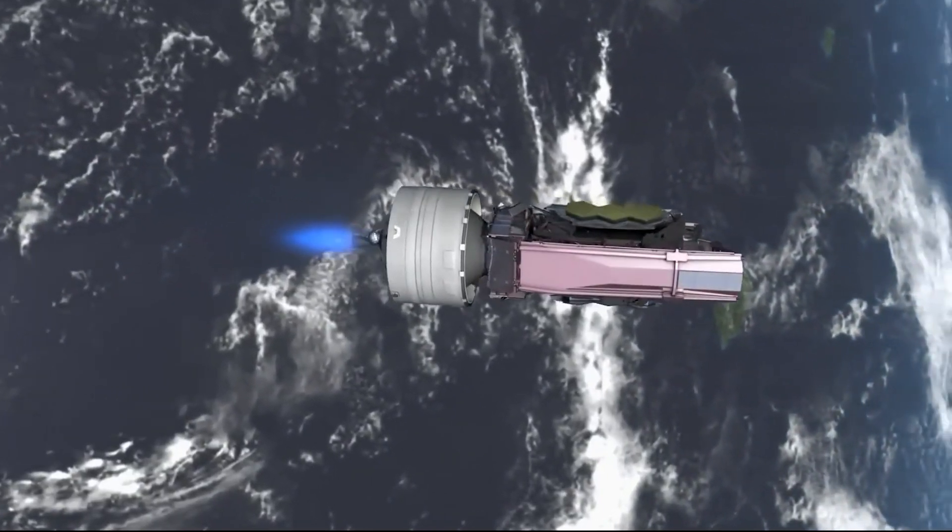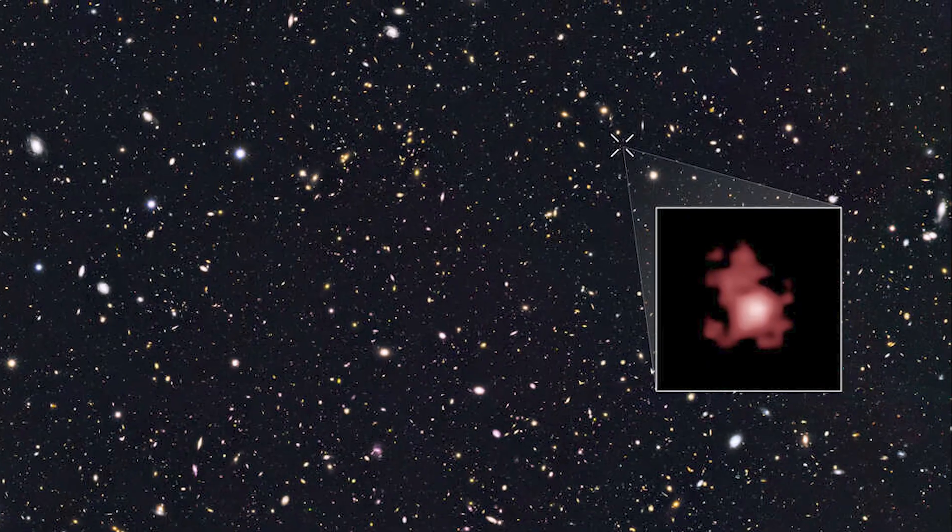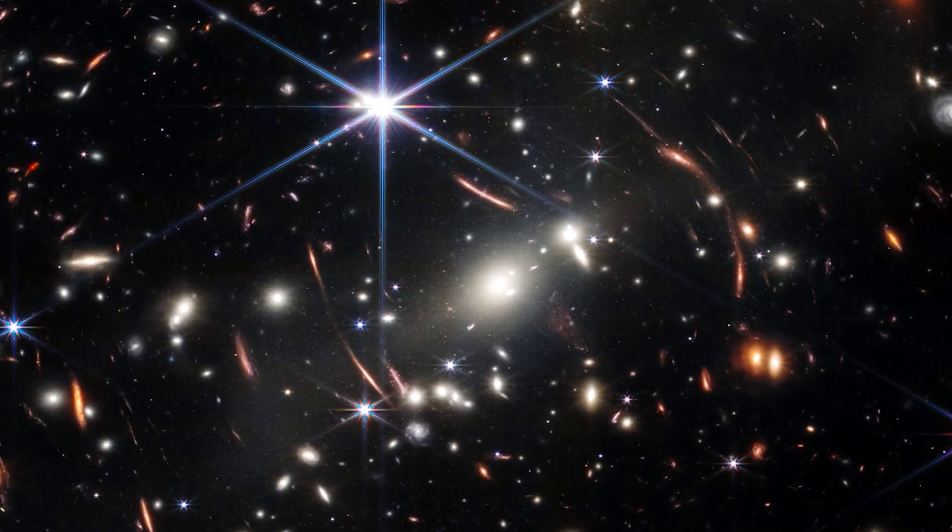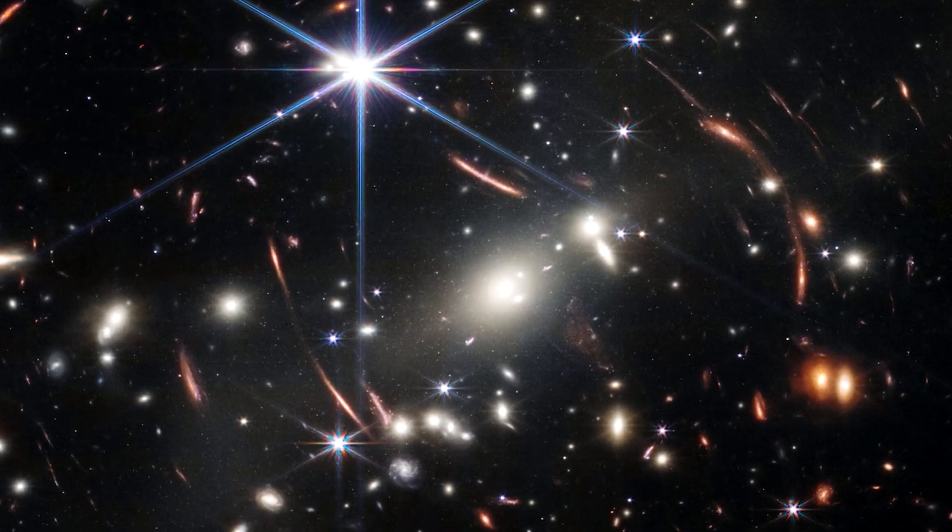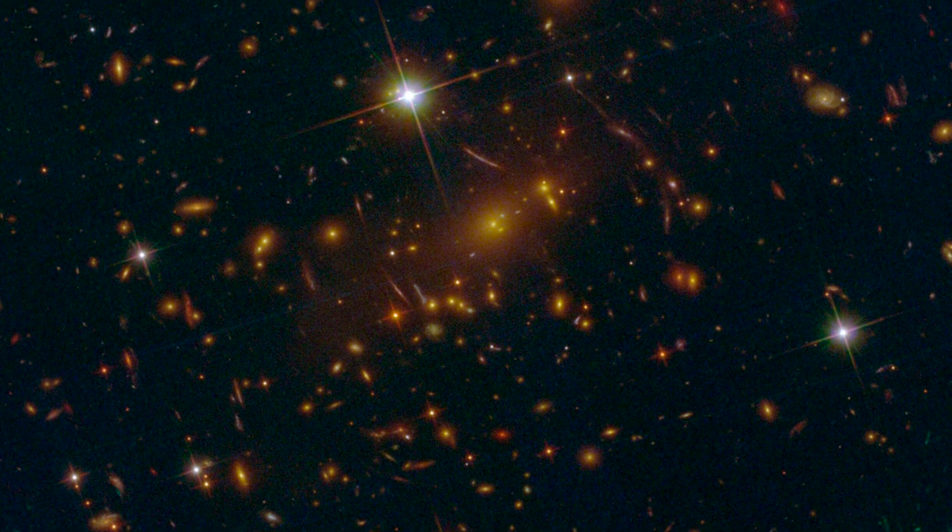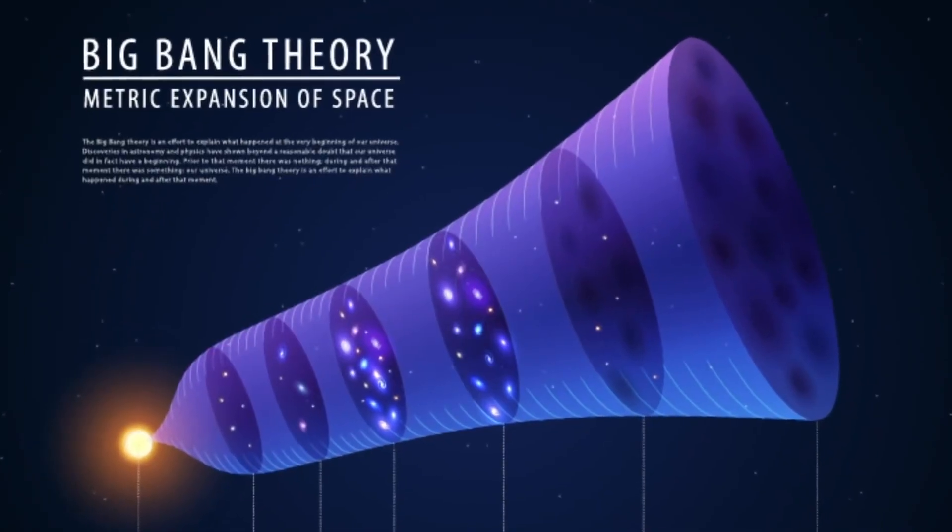Six months after it launched to orbit, the JWST released never-before-seen photos of a distant galaxy, SMAX 0723. But something is significantly wrong with these photos. These are not the images our scientists predicted them to be. One genius scientist noticed something bizarre, something that is challenging the core of the Big Bang Theory.